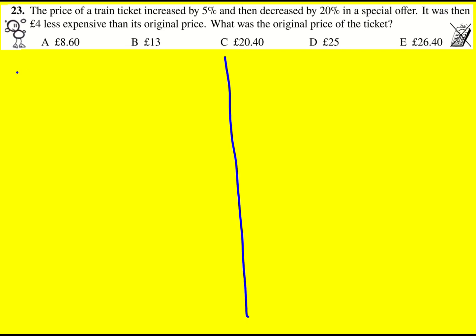So let's say the price for tickets is x, and if we increase it by 5%, we actually times by 1.05, because this represents 105%. And if we then decrease it by 20%, we would times by 0.8.